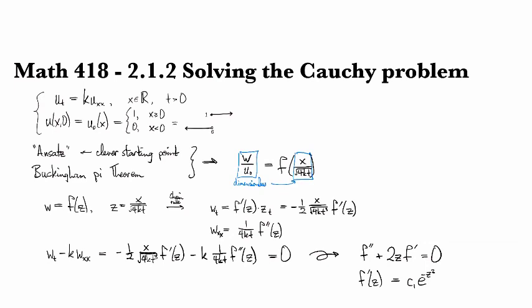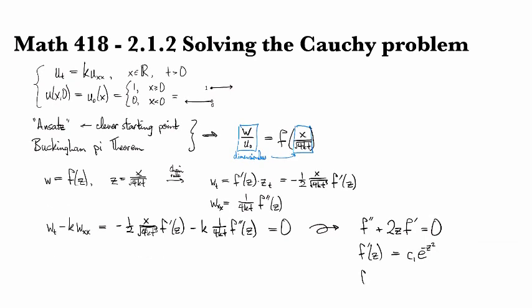And so once you have that, finding F is just a straightforward integration, no fancy ODE techniques necessary. And so you get C1 integral from zero to Z e to the minus R squared dR plus some other arbitrary constant.